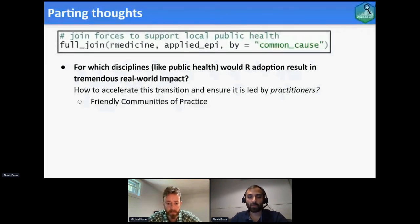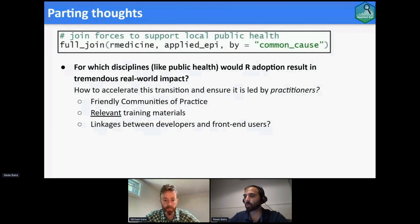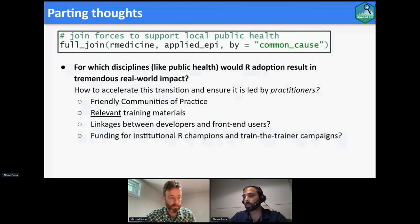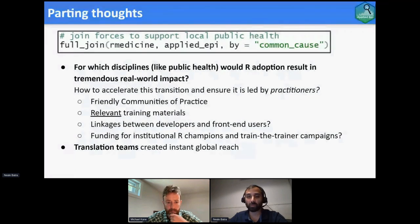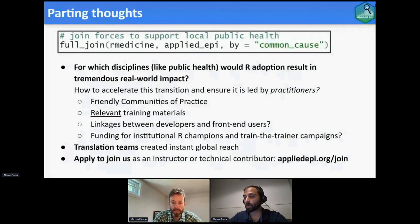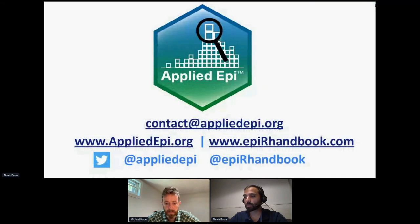Friendly communities of practice are important, as are relevant training materials — most public health EPIs are not doing modeling, they're doing very basic descriptive work. Linkages between developers and front-end users are extremely important so that the tools made are actually useful. More funding is needed so that champions at health agencies can become institutional champions, leading train-the-trainer campaigns. Our translation teams have been wonderful — hundreds of people involved, really expanding our global reach. If you're interested in applying to be an instructor or technical contributor, we have an open call on our website.